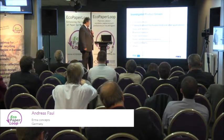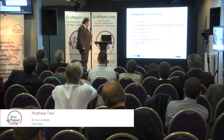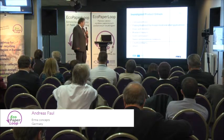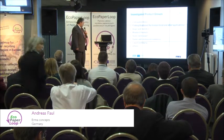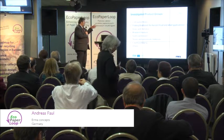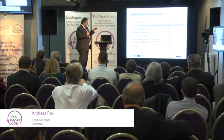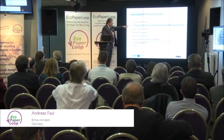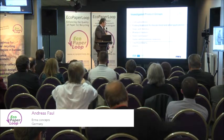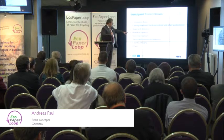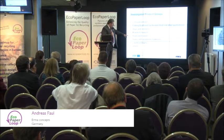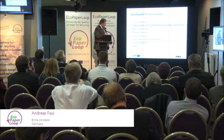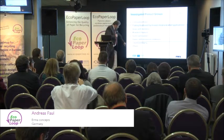Coming to the results, we decided to split the whole field of results into several product groups: corrugated boxes, which is probably the biggest one by tonnage in the market; then folding box board in two subgroups for frozen food and general applications; bags; molded products such as egg cartons; paper sacks; sacks with composite materials, meaning with a plastic layer; liquid packaging; and others.